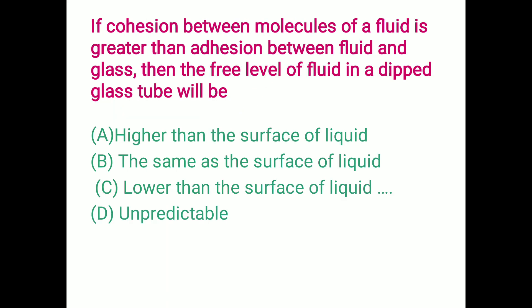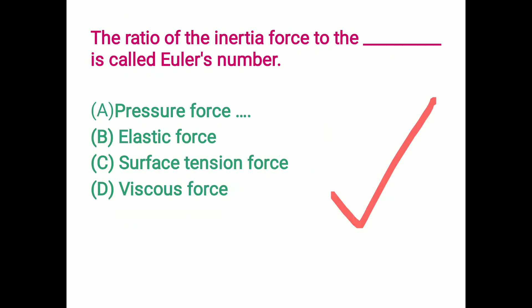If cohesion between molecules of a fluid is greater than adhesion between the fluid and glass, then the free level of fluid in a glass tube will be lower than the surface of the liquid. Option C is the correct answer.